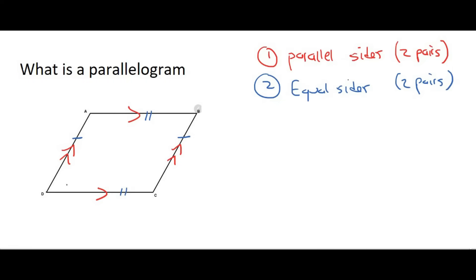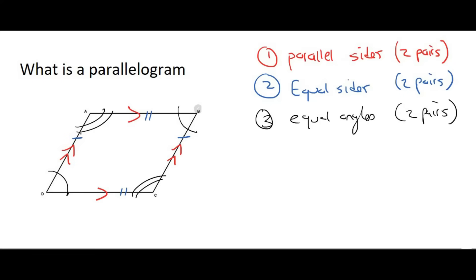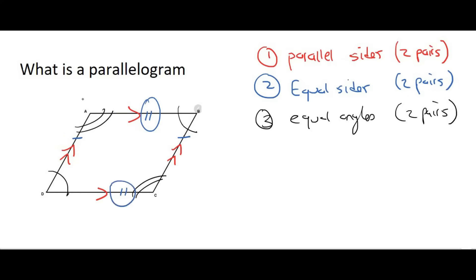Then we can talk about angles. For a parallelogram, the opposite angles are always the same. So we can say: two pairs of equal angles, and it must always be the opposite ones. For the parallel sides, the opposite one is the same. For the sides, the opposite one is the same. And for the angles, the opposite ones are also the same.